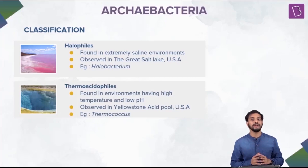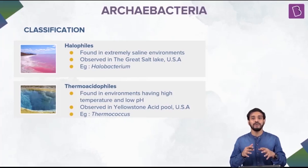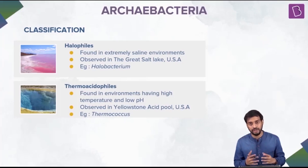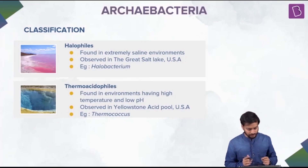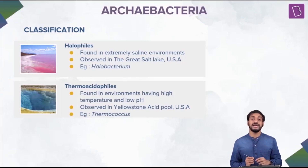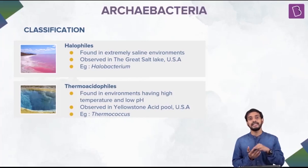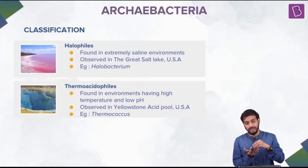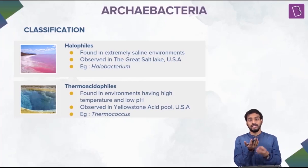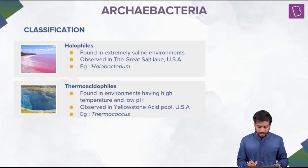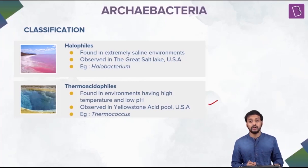The next type is thermoacidophiles. 'Thermo' refers to temperature and 'acido' refers to acidic pH conditions. Thermoacidophiles can tolerate both high temperatures of about 80 degrees Celsius and highly acidic conditions with a pH of about 2. A pH of 2 is extremely acidic — strong enough to burn through skin — yet these bacteria survive. They are found in the Yellowstone acid pool in the US, and Thermococcus is an example.